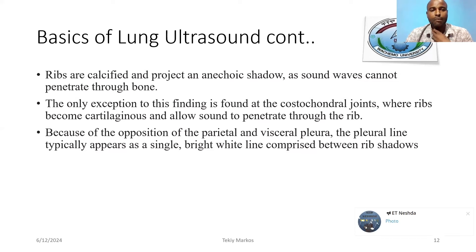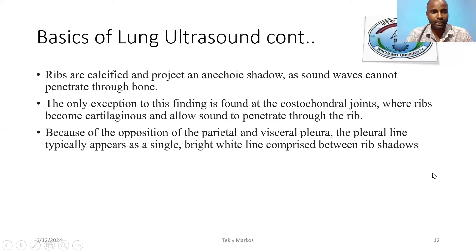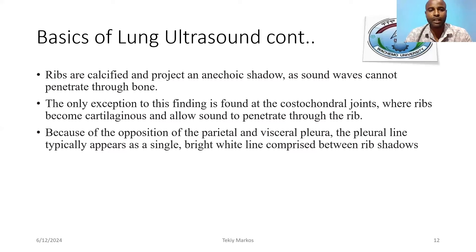While doing this, we manipulate the probe with angulation, rotation, or by changing the position or sliding pattern of our probe. While examining with ultrasound, ribs are calcified and project acoustic shadows. The only exception is the costochondral joint, which allows sound to penetrate through the ribs.